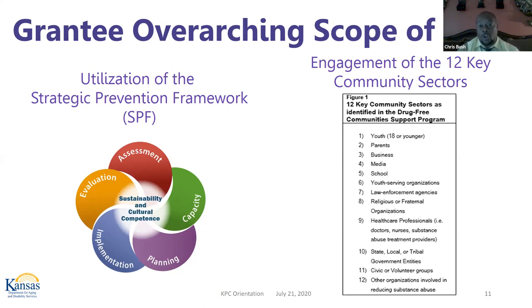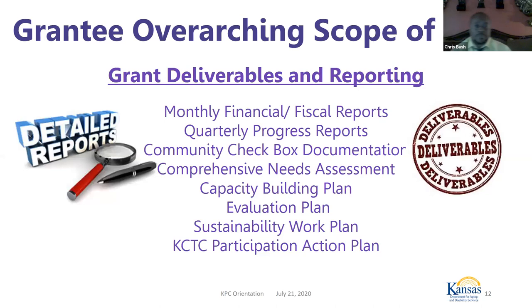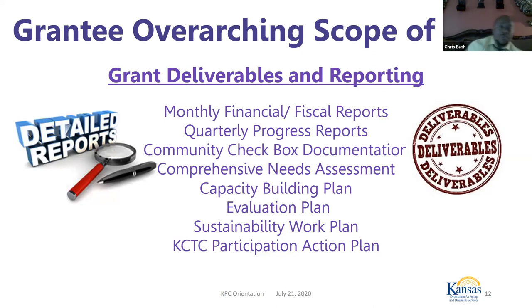These are some of the grant deliverables and reporting we'll be asking for throughout the year: monthly financial reports, fiscal reports, quarterly reports, entering information in the community checkbox, doing a comprehensive needs assessment, capacity building plan, evaluation plan, a sustainability work plan, and also participating in the KCTC data and developing the plan.